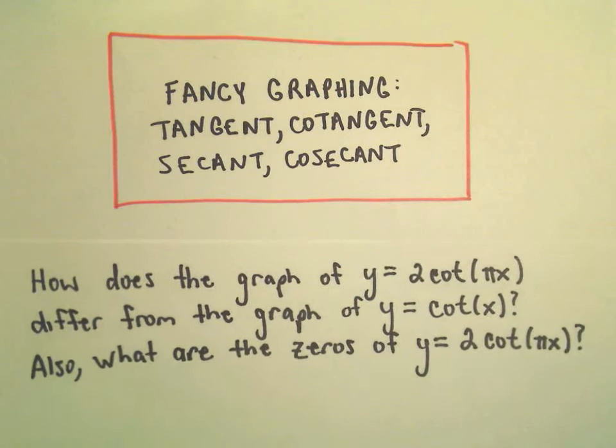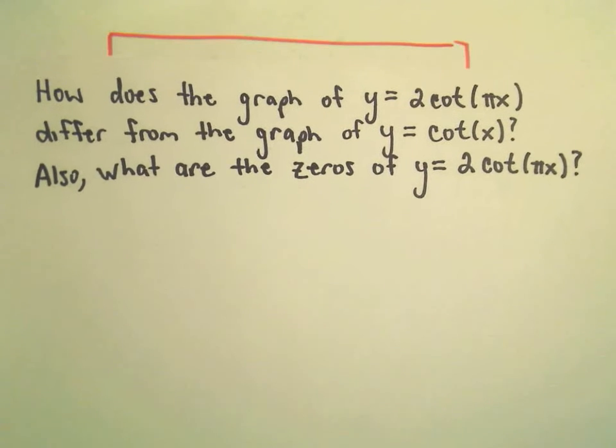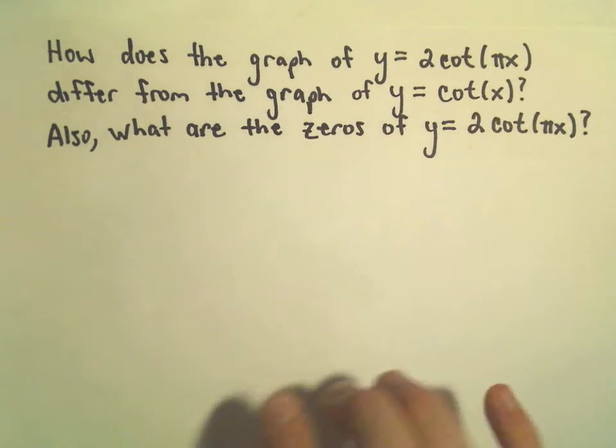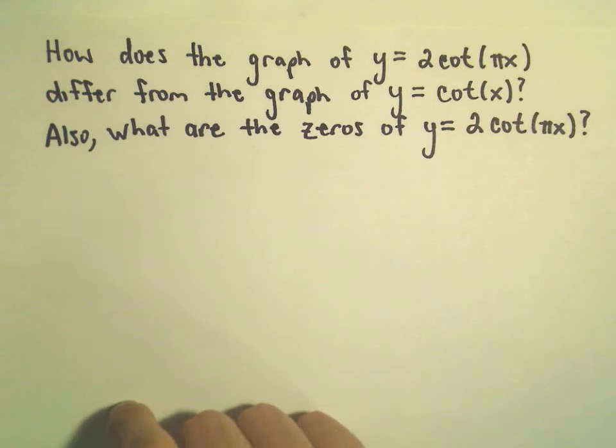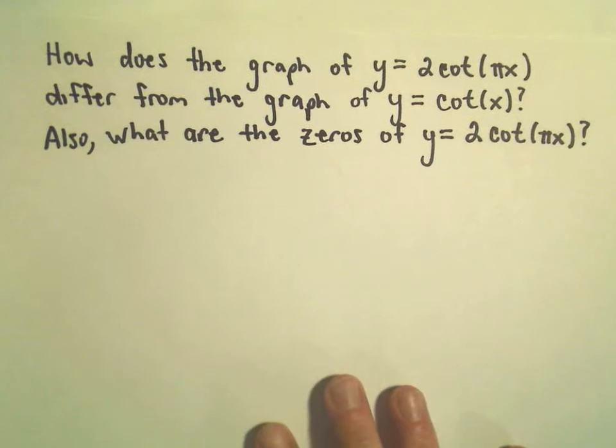Alright, so just a couple more questions related to graphing tangent, cotangent, secant, and cosecant. Here we've got a couple questions related to cotangent. How does the graph of y = 2cot(πx) differ from the graph of y = cot(x)? Also, what are the zeros of y = 2cot(πx)?